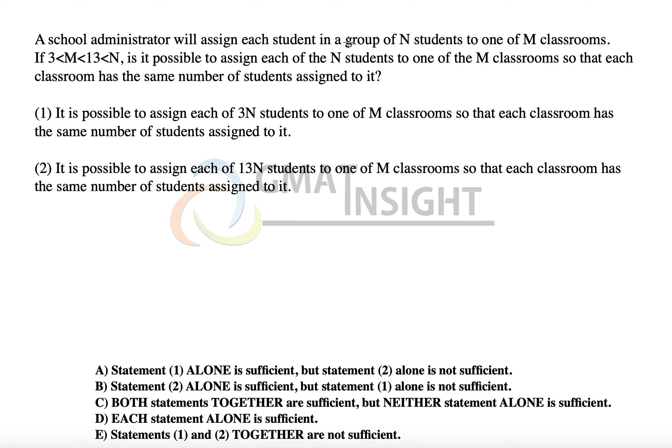A school administrator will assign each student in a group of N students to one of M classrooms where M is between 3 and 13 and N is greater than 13. Is it possible to assign N students to one of the M classrooms so that each classroom has the same number of students assigned to it?